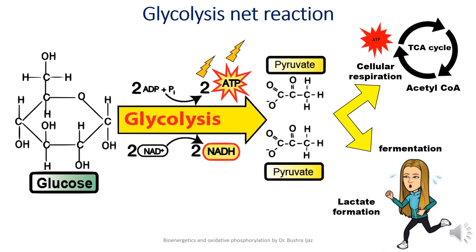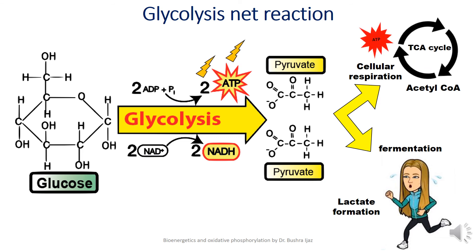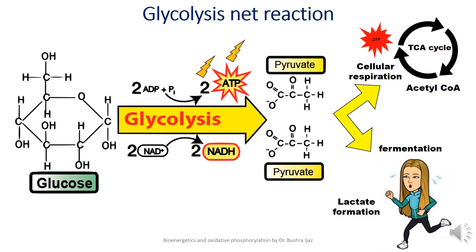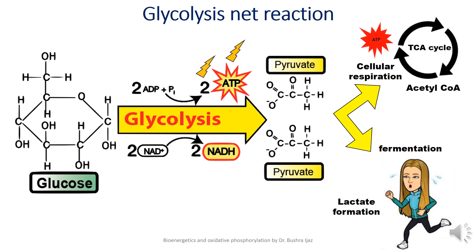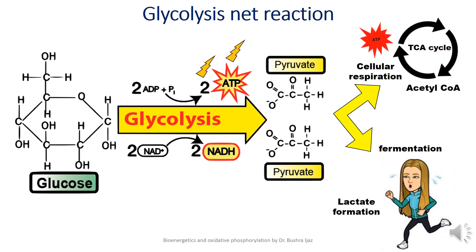So all cells need a way to turn NADH back to NAD to keep glycolysis going. There are two basic ways: when oxygen is present, NADH can pass its electrons into the electron transport chain, regenerating NAD for use in glycolysis. When oxygen is absent, cells may use other simpler pathways to regenerate NAD ions — in these pathways NADH donates its electrons to an acceptor molecule in a reaction that does not make ATP but does regenerate NAD so glycolysis can continue. This process is called fermentation.